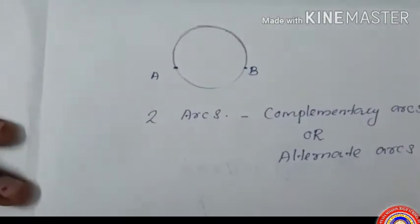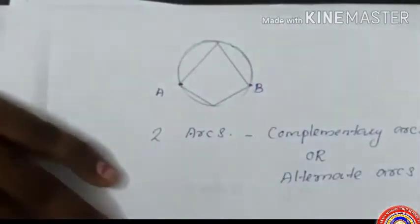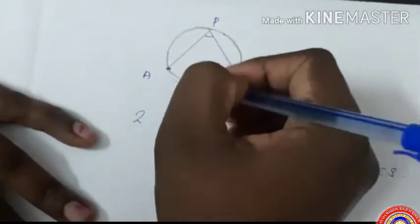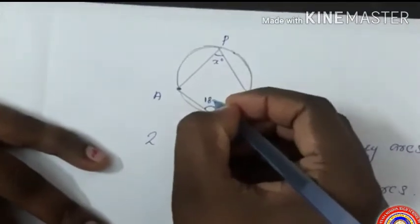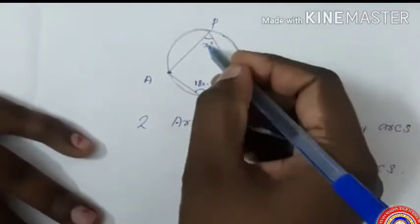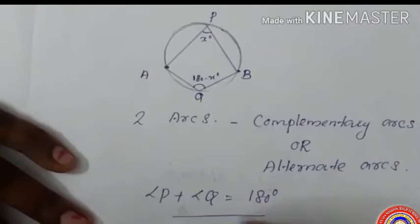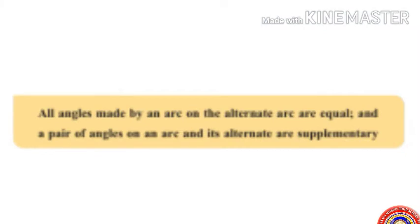Now let's see the angles formed on each arc — the angle formed on the larger part and the angle formed on the smaller part. The sum of angles on alternate arcs are supplementary. Here angle P and angle Q are the angles on the alternate arcs, then angle P plus angle Q equals 180 degrees. Hence all angles made by an arc on the alternate arc are equal, and a pair of angles on an arc and its alternate arc are supplementary.